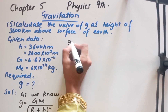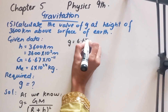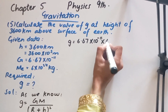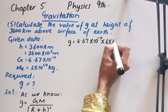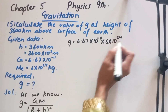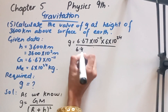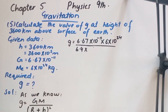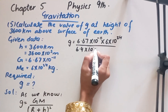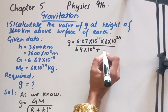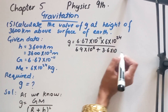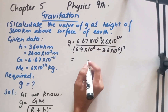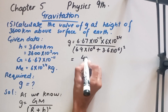So g = 6.67 × 10⁻¹¹ × 6 × 10²⁴ kg, over (radius + height)². The radius of earth is 6.4 × 10⁶ m and the height is 3600 × 10³ m, which we rewrite as 3.6 × 10⁶ m. We then take the square of their sum.